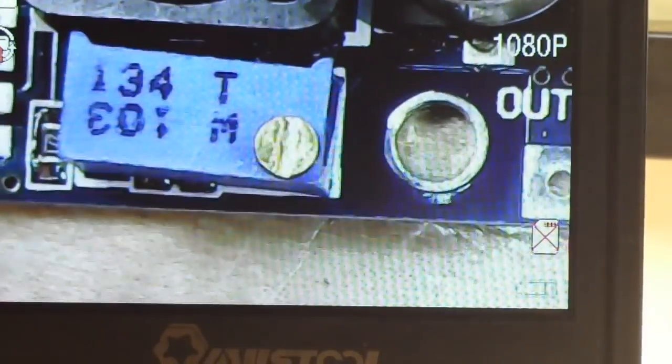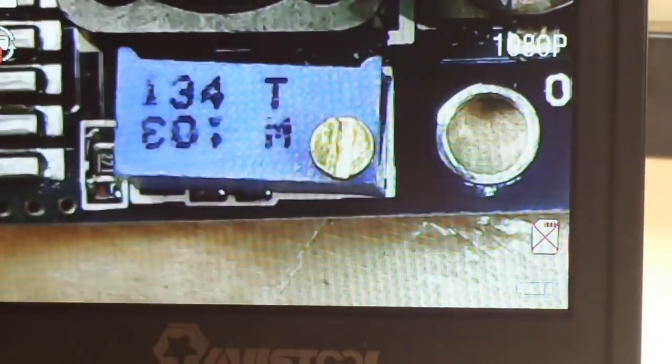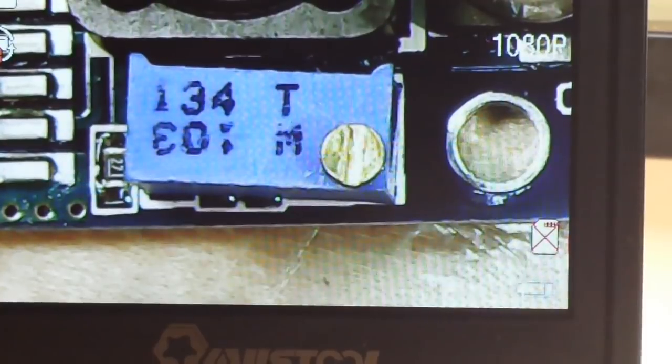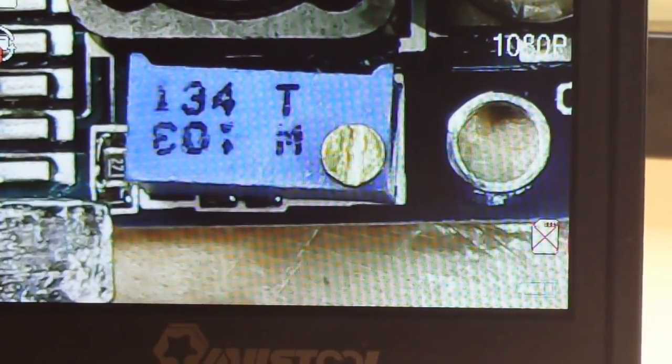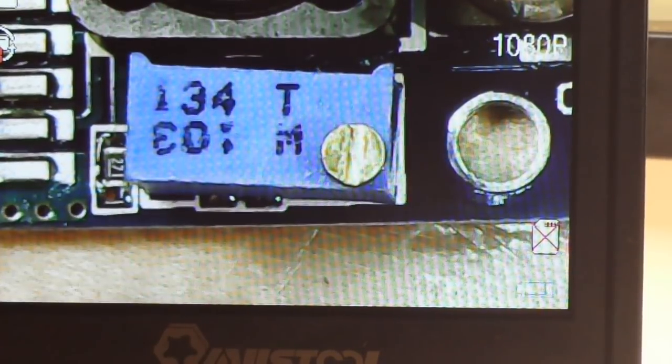Then of course we have the ubiquitous 10 turn pot, and next to the 10 turn pot is another 271, so that's a 270 ohm resistor.